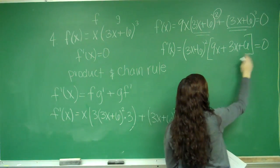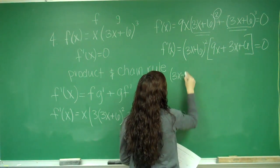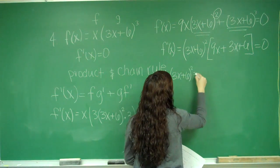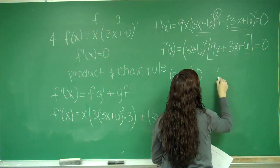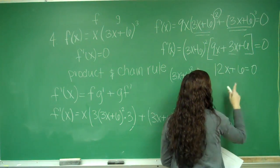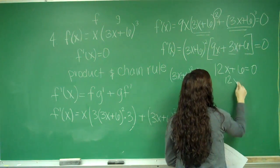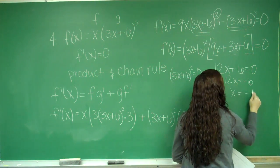So now I can set both terms equal to 0 separately. So I'll have (3x plus 6) squared equals 0. And then I can combine these two. So I'll have 12x plus 6 equals 0. So here I have 12x equals negative 6, x equals negative 1 half.